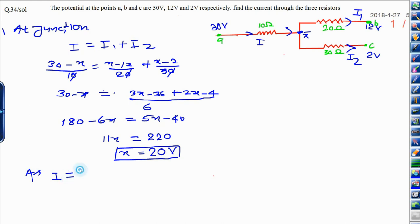I is equal to 30 minus X upon 10. We will solve it: 30 minus X, X is 20 divided by 10, that will be 10 upon 10. Cancel out and finally answer will be 1 ampere. This is the first answer.